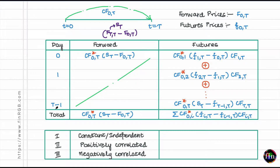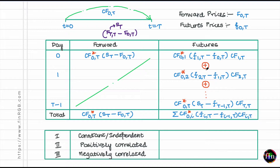You can continue this process. On day T−1, do a trade on the corresponding number of units. When you reach time T, the PNL looks like: S_T minus the futures price at which you started, which is f(T−1, T). Since this PNL is already at day T, there is no need to multiply it by a capitalization factor.